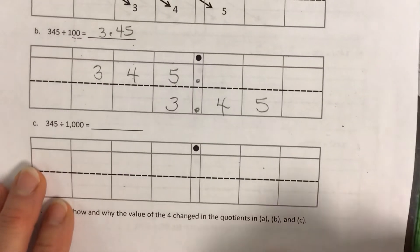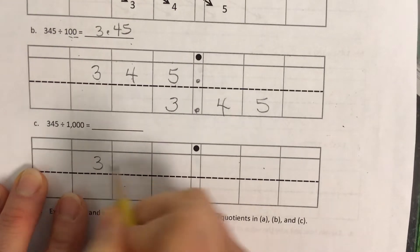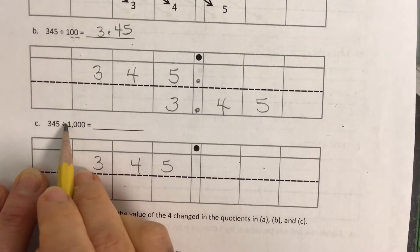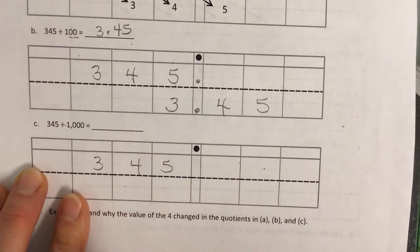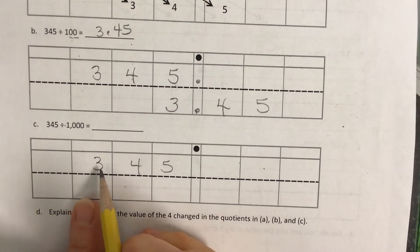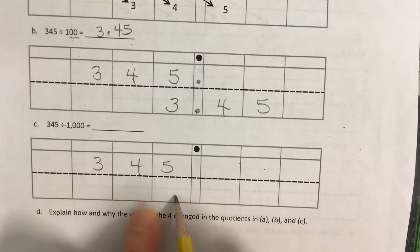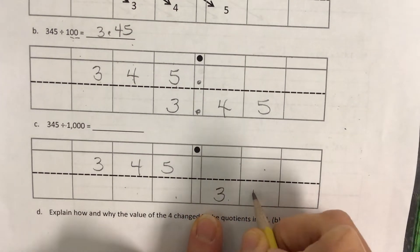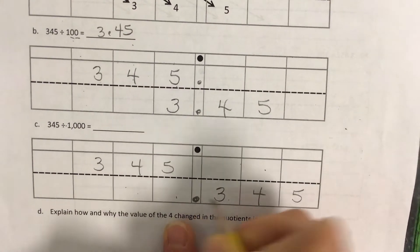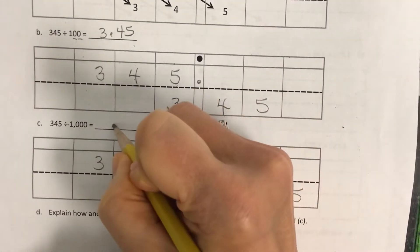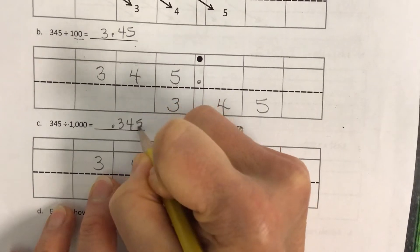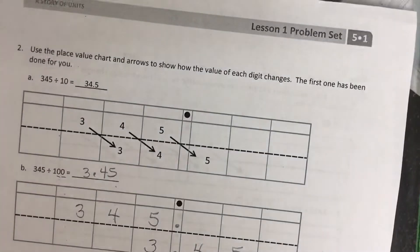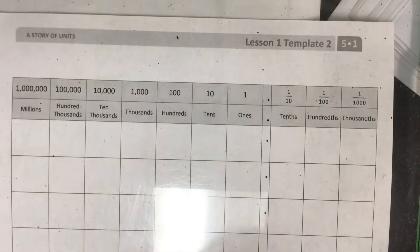If we start with 345 again and divide by 1,000, the digits get three places smaller because there are three zeros in 1,000. The 3 gets one place smaller, two places smaller, three places smaller, and the other digits follow. Your answer is 345 thousandths, and you can put a zero in front of the decimal point. That was just a briefing of Lesson 1 — today's focus is Lesson 2.